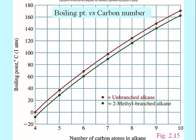Boiling points are a way to compare alkanes — not only to distinguish truly different molecules, but this graph shows that the number of carbons in an alkane correlates to a predictable boiling point. It's not exactly a straight line, but it certainly is a smooth curve, and the boiling point goes up in a predictable manner as you add carbons.